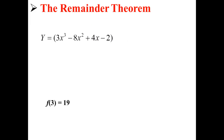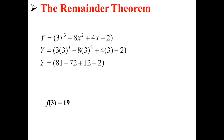Let's try that out with our original equation. Here, we plug 3 in for x. So we have y is equal to 3 times 3 cubed minus 8 times 3 squared plus 4 times 3 minus 2. We simplify this to 81 minus 72 plus 12 minus 2, for a final answer of y is equal to 19. So according to the remainder theorem, it was correct that f of 3 was equal to 19.